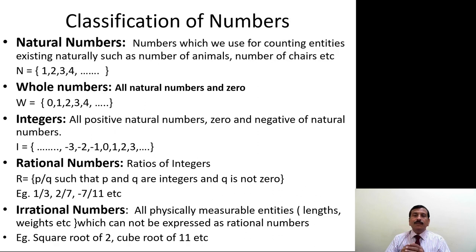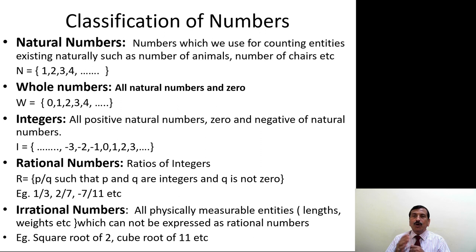Natural numbers are numbers which we use for counting entities existing naturally, such as the number of animals, number of chairs, etc. The natural number set consists of numbers 1, 2, 3, 4, and so on up to infinity.